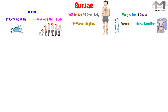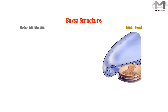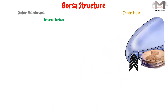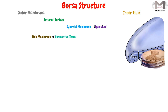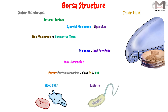Now let's go back to our Bursae structure. The Bursae is composed of an outer membrane and an inner fluid. The internal surface of the outer membrane will be lined with a synovial membrane, or we call it synovium. This membrane is a very thin membrane of connective tissue, in which its thickness is just a few cells. Keep in mind that this membrane is semi-permeable, which means it will permit certain materials to flow in and out — for example, it will permit blood cells and bacteria to enter the Bursae sac.